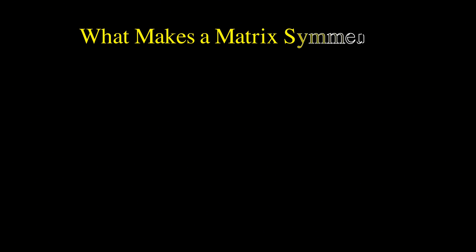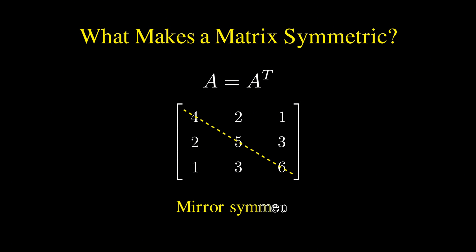But a symmetric matrix has a special property captured by the equation A equals A transpose, which means that when we flip the matrix across its main diagonal, you get the exact same matrix back. Notice how the entries on the opposite sides of this diagonal are identical. The top middle 2 matches the middle left 2, the top right corner 1 matches the bottom left corner 1, and the middle right 3 matches the bottom middle left 3. It's like the matrix is perfectly mirrored across this diagonal line.